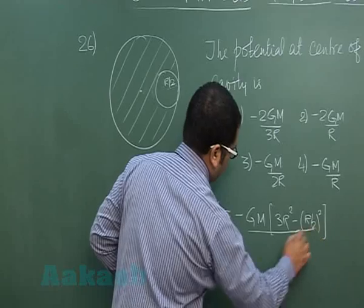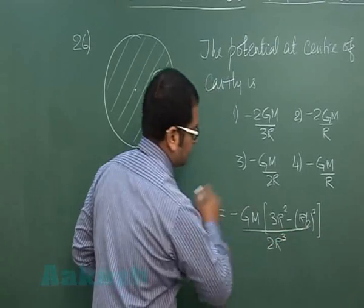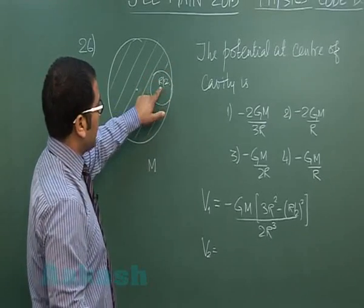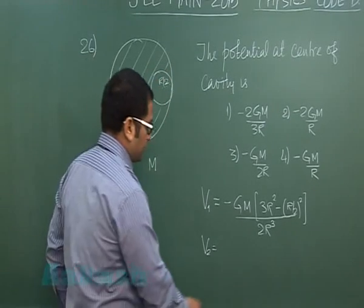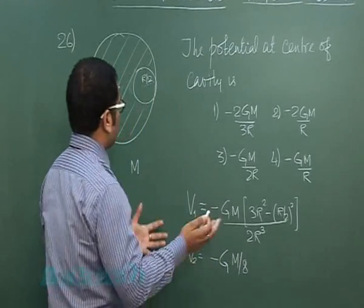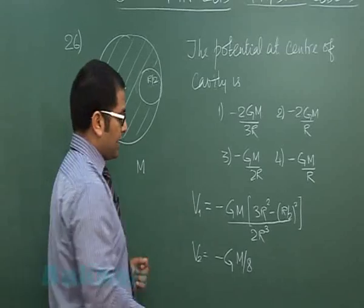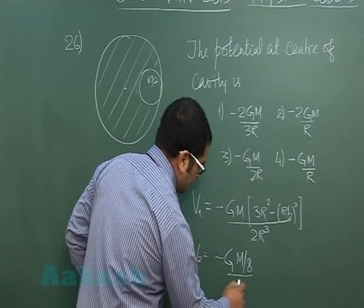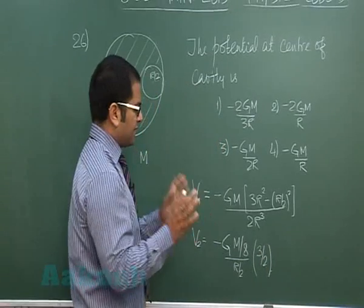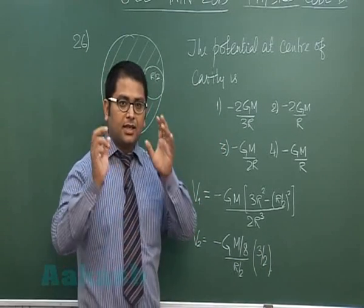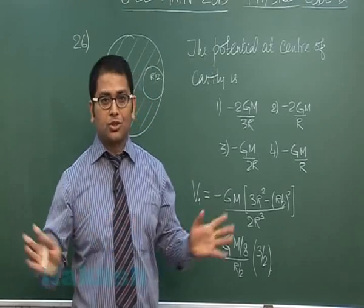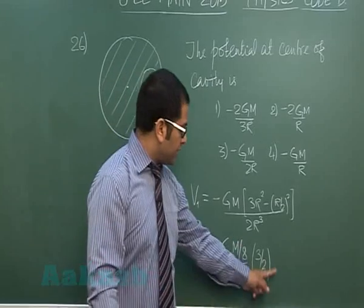V2 is the potential due to this solid sphere at the center, and that would be minus G times mass M/8. It's quite obvious because the radius is half - the radius is r/2, times 3/2. Because generally we know the potential at the center of a solid sphere is minus 3/2 times GM/radius. That's almost common to all.